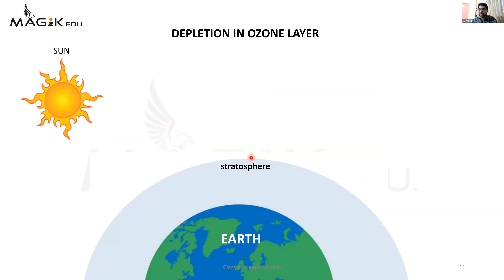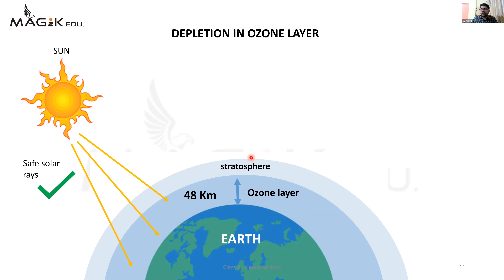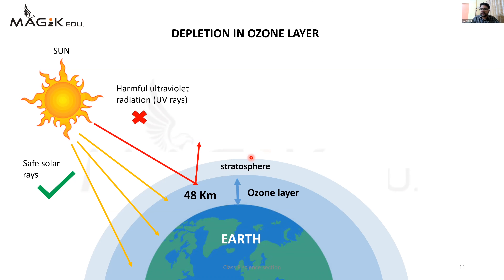Air pollution ka aur effect ozone layer par bhi dekhne ko milta hai. Stratosphere ka layer hota hai aur us stratosphere layer ke 48 km ke upar ozone ka layer hota hai. Yeh ozone layer earth ko protection dene ka kaam karta hai - safe solar rays ko earth tak aane ki permission deta hai. Yeh ek gwaldar ya phir ek guard ki tarah kaam karta hai - safe solar rays ko earth ki taraf aane deta hai par agar earth ko koi harmful ray aati hai to isse woh reflect hokar wapis chali jaati hai. Ozone harmful UV radiation yaani ultraviolet radiation ko pass hone nahi deta. Par air pollution ke wajah se yeh ozone ka shield kum ho raha hai - yeh ozone dheere dheere deplete hone start hua hai.